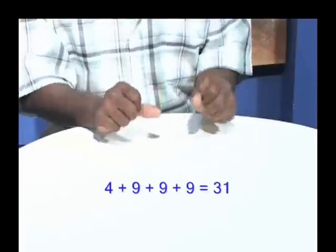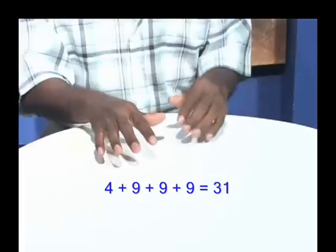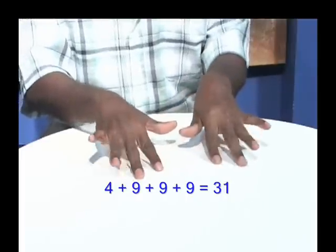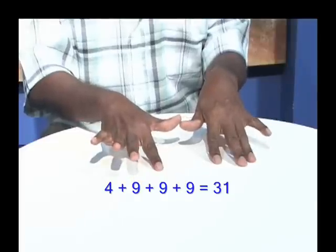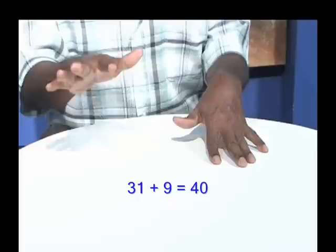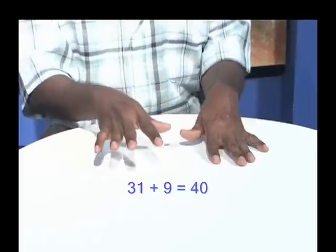Now, suppose I had to do 4 plus 9 plus 9 plus 9, quickly. Notice how fast you can do that. 4 plus 9 plus 9 plus 9, the answer is 31. If I wanted to add another 9 to that, plus 9, the answer is 40. So that's how we can add 9.